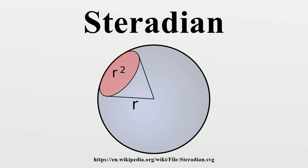Analogous to radians: in two dimensions, an angle is related to the arc length it cuts out, where L is arc length, R is the radius of the circle, and the unit is the radian. In three dimensions, the solid angle is related to the area it cuts out, where A is the surface area of the spherical cap (2πRH), R is the radius of the sphere, and the unit is the steradian.